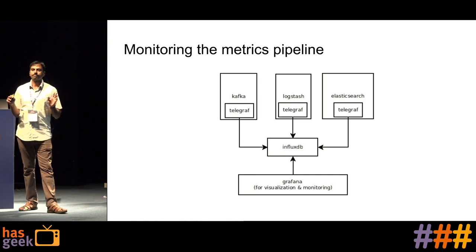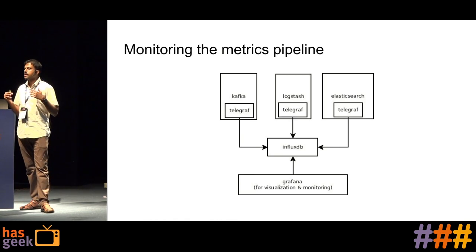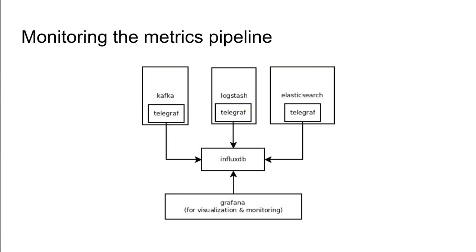We also want to monitor the metrics aggregation system itself — for example, if a Kafka node goes down, we want an alert. For that, we installed Telegraf on each component like Kafka, Logstash, and Elasticsearch to collect their metrics. We don't send these to the same metrics aggregation system, as that would introduce a cyclic dependency. Instead, we use InfluxDB as the metric data store for these system metrics. We use Grafana for visualization and monitoring, and fortunately Grafana supports monitoring on InfluxDB.